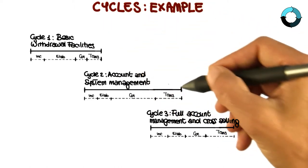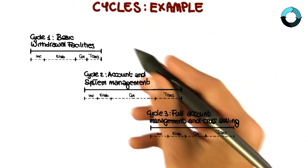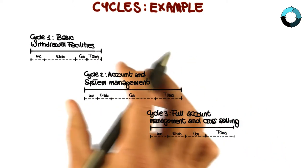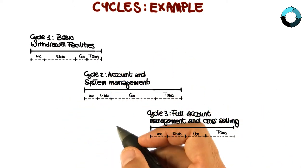The second one is that these cycles, as you can see, are slightly overlapping. So it is not the case that you finish a cycle and then you start the next one. There is a little bit of overlap among cycles.